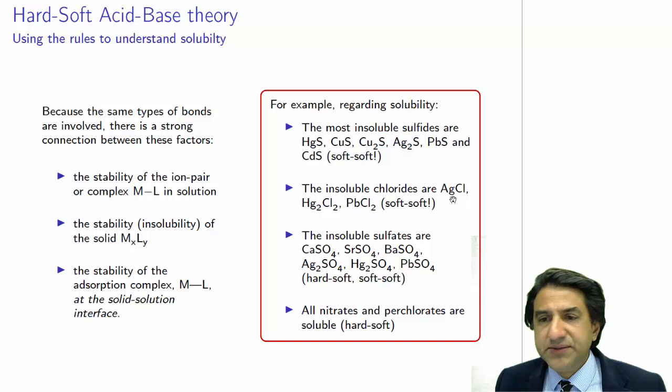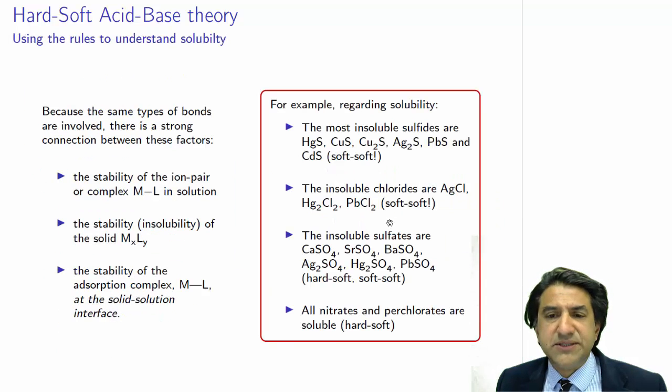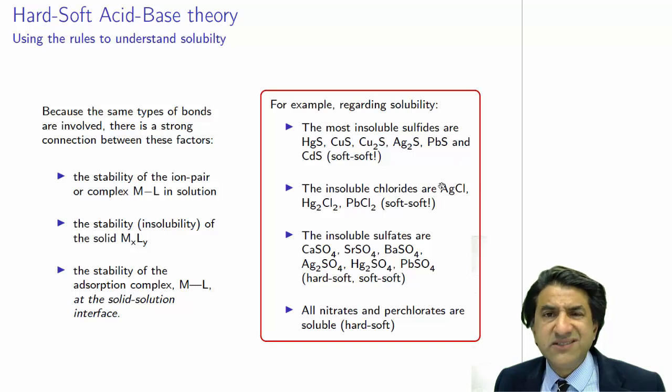Insoluble chlorides, AgCl. Always wondered why silver chloride was insoluble, and sodium chloride was not. Well, sodium chloride, sodium is very hard. Chloride is intermediate to hard. So it's hard to intermediate. Silver chloride, on the other hand, is soft. Silver's down here, lots of d-electrons. Chlorine, it's a big atom, it's an intermediate one. It could be soft, but it's insoluble. And it is. You've tried to do these precipitation reactions. It doesn't precipitate that well, but it does precipitate. Mercury chloride, soft-soft. Lead chloride, soft.